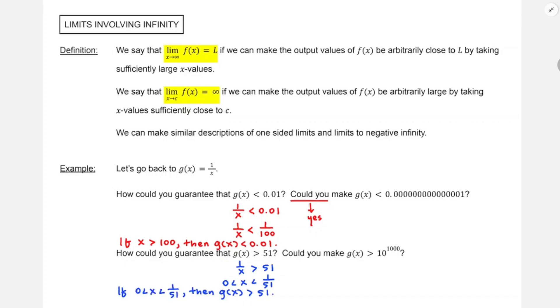And if I wanted to make g of x greater than 10 to the 1000 — that's a really large number — I could just choose x between 0 and 1 over that number. So we'll just say yes.